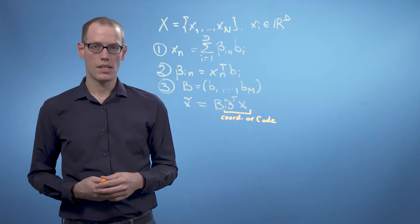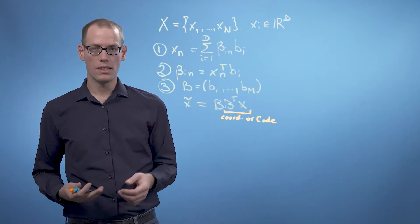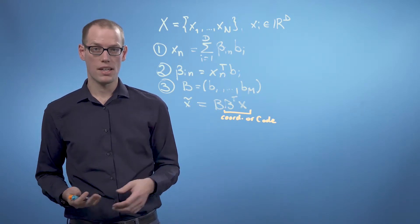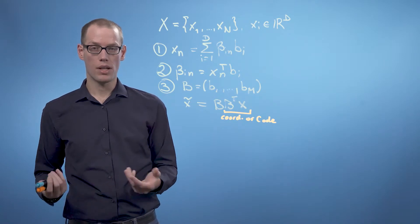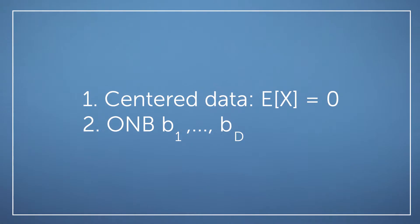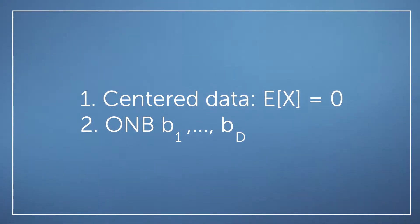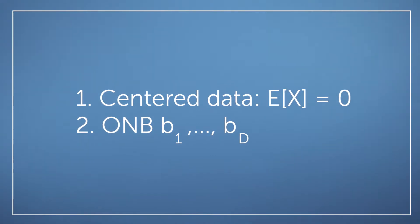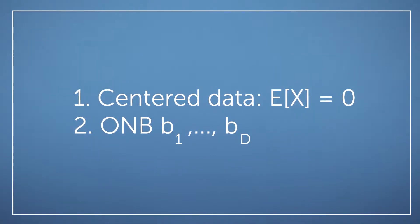Now let's have a look at PCA. The key idea in PCA is to find a lower dimensional representation X_n tilde of X_n that can be expressed using fewer basis vectors, let's say m. We assume the data is centered, that means the data set has mean zero, and we also assume that b_1 to b_d are an orthonormal basis of R^d.